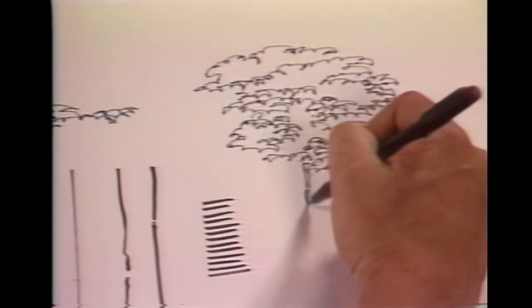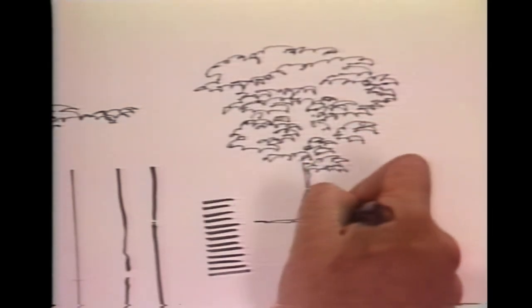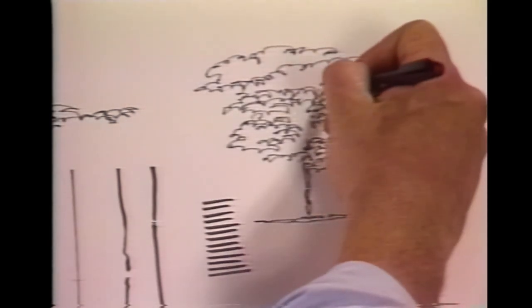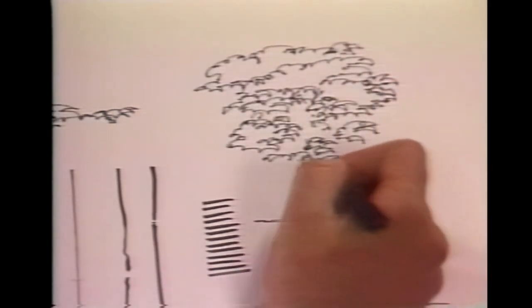I'm going to add a line for the trunk, a little bit for the ground, and that's an umbrella stroke tree.